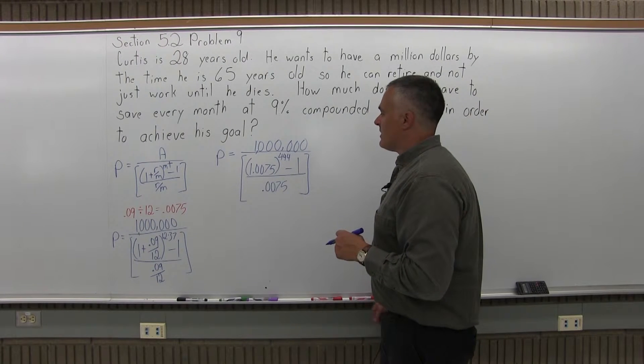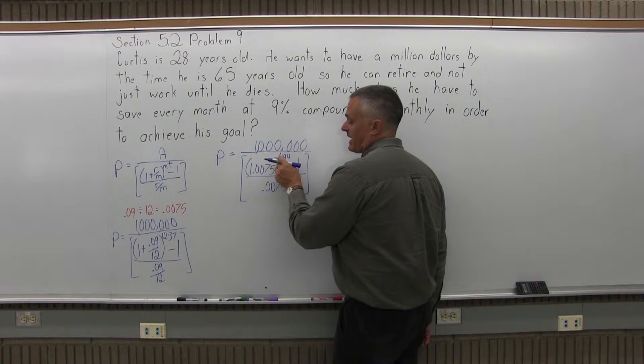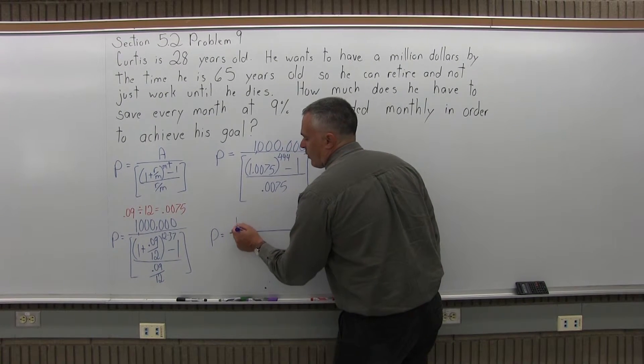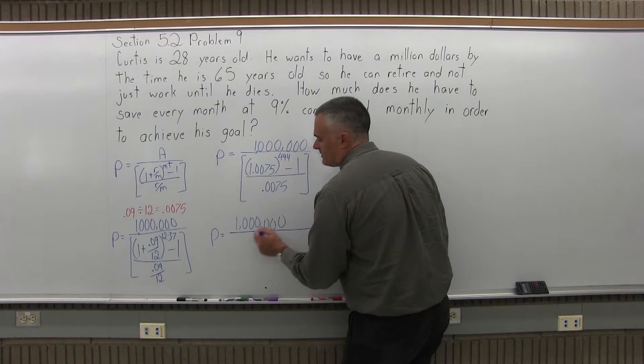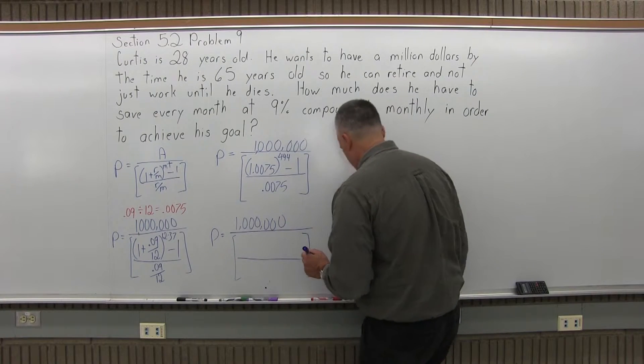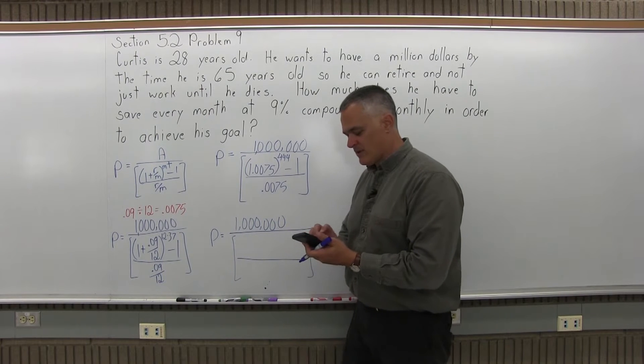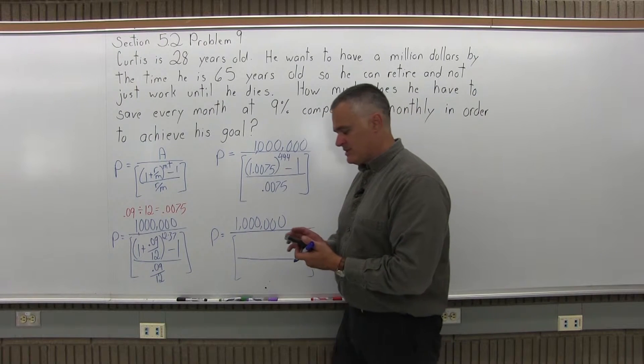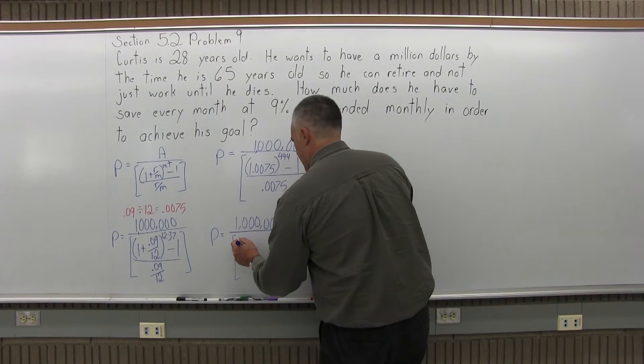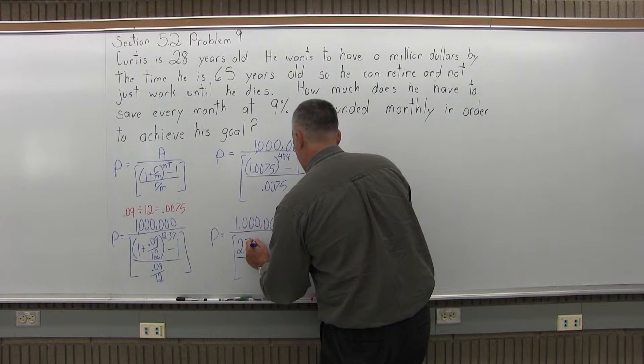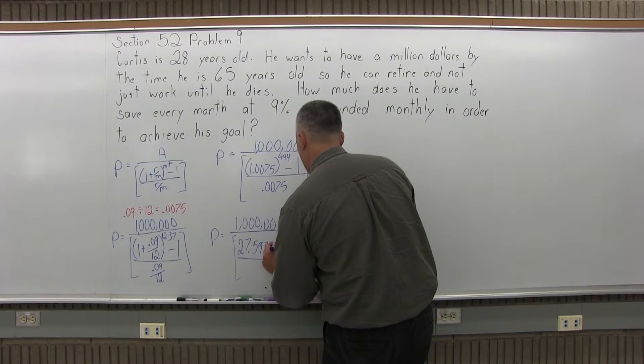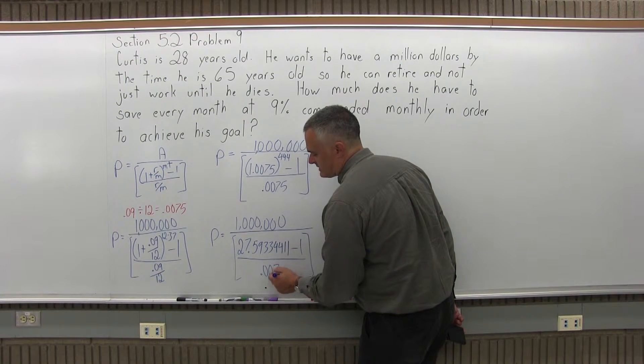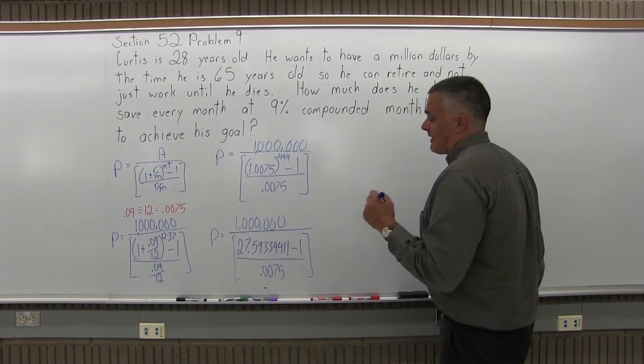Now what happens at the next part of the problem is I have to do the computation for this very, very big expo, 1.0075 to the 444th power. So when I get the answer for that, I'm going to have 1,000,000 in the top of my formula. And then when I fill out the problem, there's brackets underneath. 1.0075 exponent 444 equals, so in the numerator of my brackets I have 27.59334411. And after that there's a minus 1. And the denominator of the brackets is still .0075.